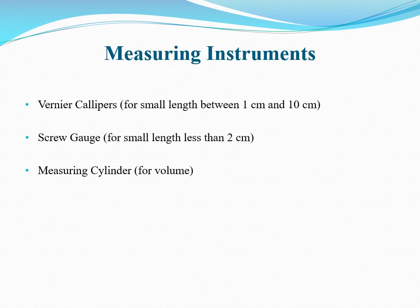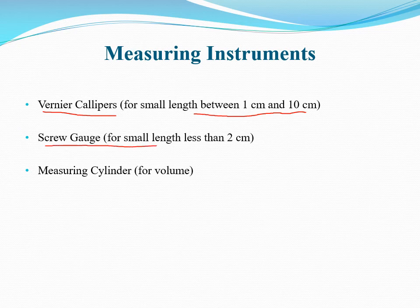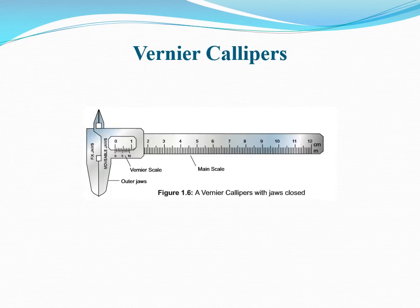Vernier Calipers are used for measuring small length of an object between 1 cm and 10 cm. Similarly, Screw Gauge is also used for measuring small length less than 2 cm. And Measuring Cylinders are used to find volume. Let's start with Vernier Calipers.